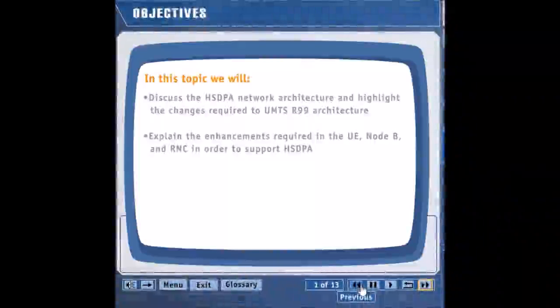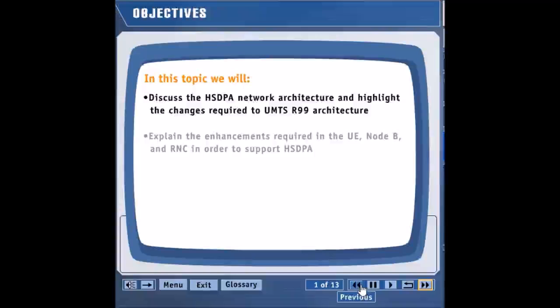In this topic, we will discuss the HSDPA network architecture and highlight the changes required to UMTS R99 architecture, and explain the enhancements required in the UE, Node B, and RNC in order to support HSDPA.